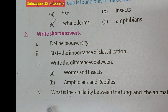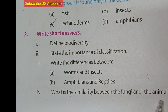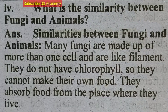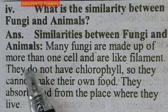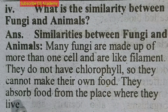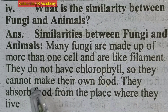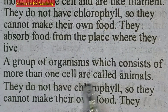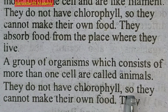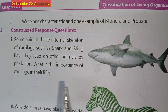Question four asks about the similarity between fungi and animals. Many fungi are made up of more than one cell, unlike filaments. They do not have chlorophyll, so they cannot make their own food — they absorb food from the place where they live. Similarly, animals consist of more than one cell, do not have chlorophyll, and depend on other animals and plants for food.